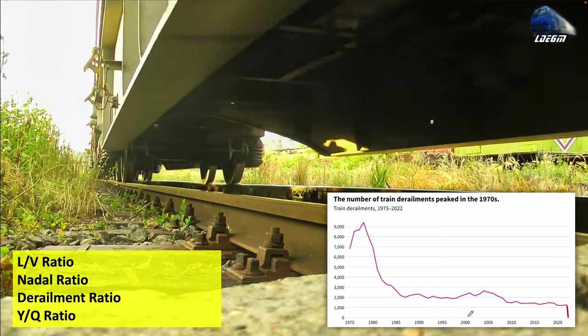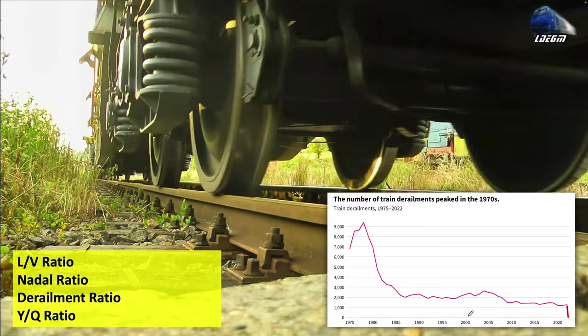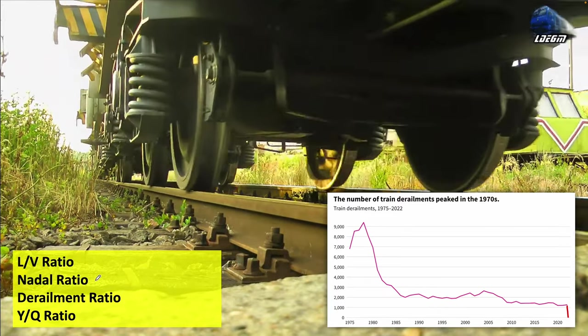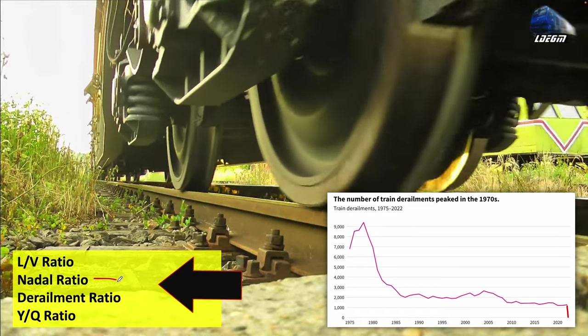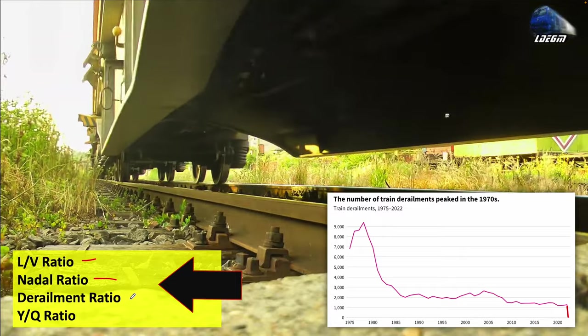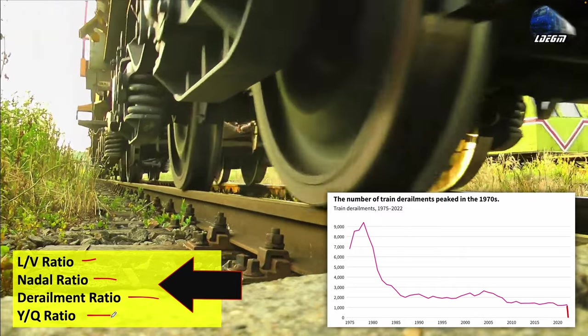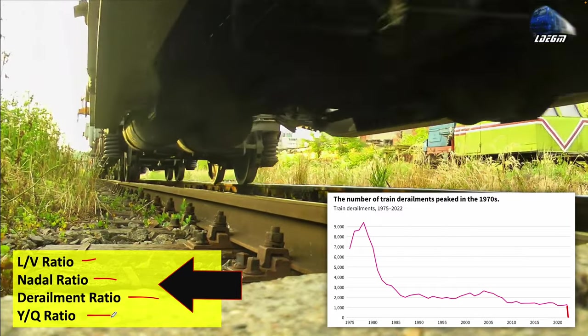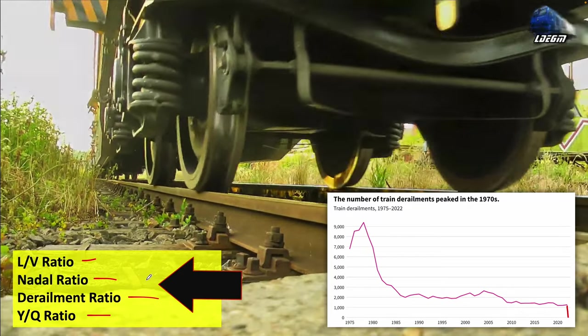In this video we'll look at different causes of derailment, but specifically we'll look at this simple ratio also called Nadal ratio, sometimes referred to as L/V ratio, derailment ratio, or Y/Q ratio, and we'll see how this simple ratio holds the key to preventing another disaster.